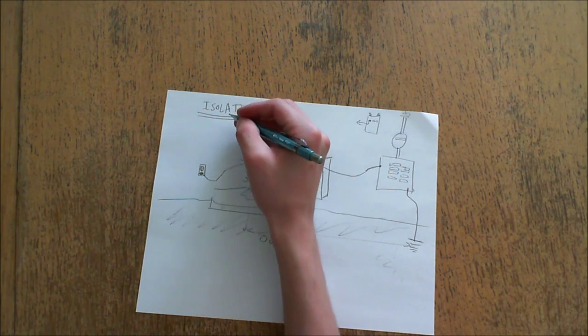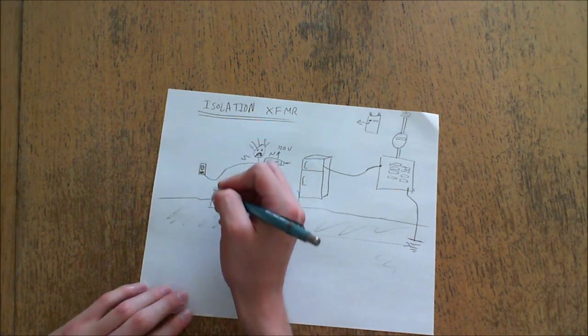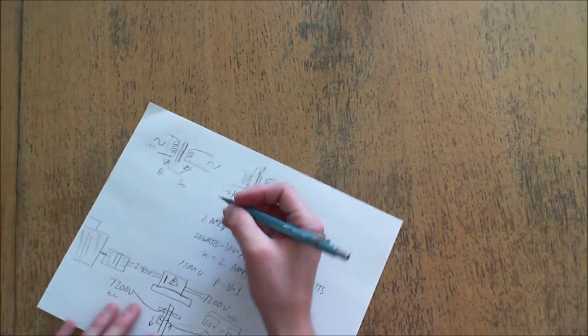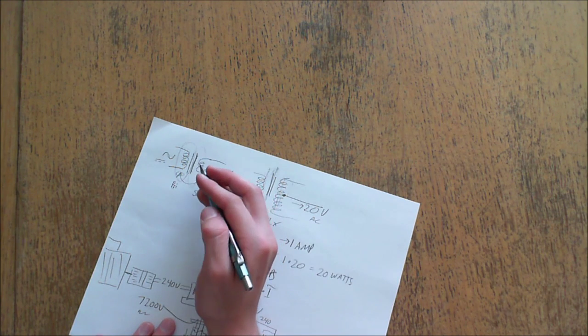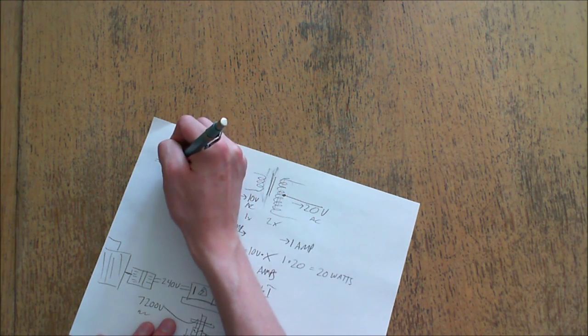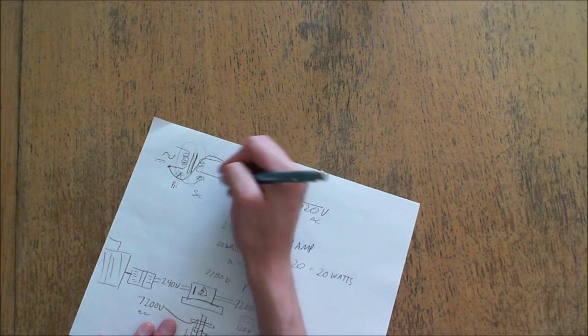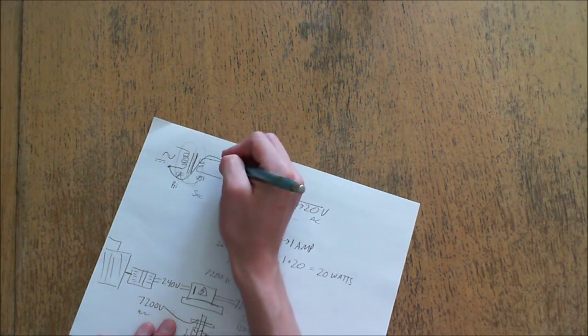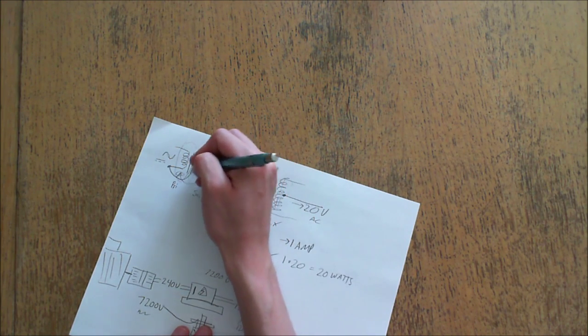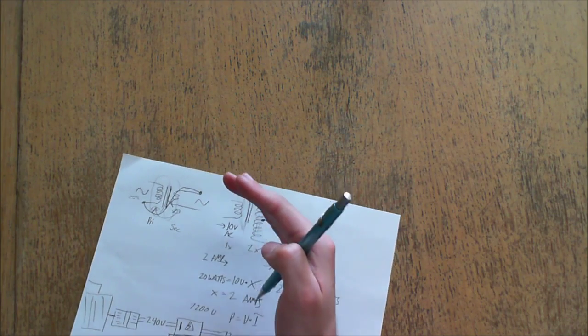Now, why do we want an isolation transformer? Well, for this very reason. As I mentioned on the previous page, there is no connection between the primary and the secondary, unless it's an auto transformer, which is a transformer in which one connection is wired in series to the other to give you a higher voltage gain. Unless it's wired like that, there shouldn't be any connection between the primary and the secondary in a properly functioning transformer.